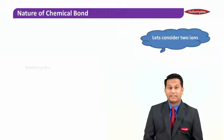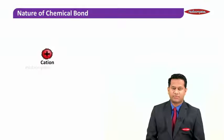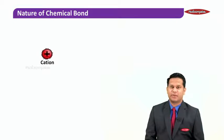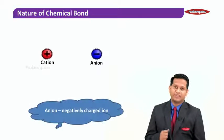To understand chemical bonds, let us consider two ions. The first one is a cation, a positively charged ion, and the second one is an anion, a negatively charged ion.